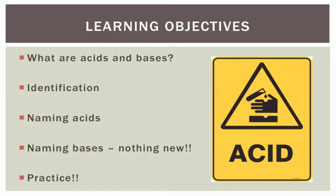We'll start by identifying what acids and bases are and talk about the process of identifying a chemical compound as being an acid or a base, so that you know when to use the acid and base rules. We'll talk about the rules for naming acids, then the rules for naming bases. As a quick preview, naming bases is actually very similar — it's going to follow the same exact rules we talked about with ionic compounds. Finally, once we've got those names underway, we'll go over some practice problems.